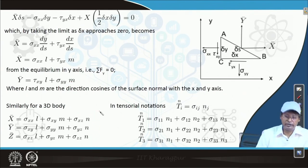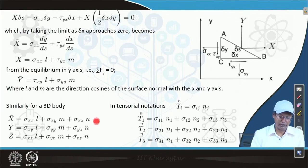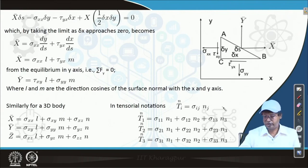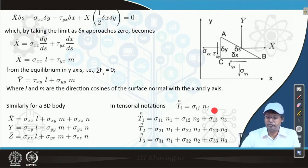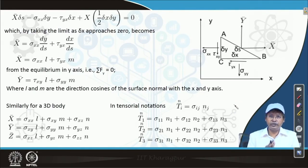For the three-dimensional case, the boundary equations involve direction cosines l, m, n with the full stress matrix sigma_xx, sigma_xy, sigma_xz and corresponding components. In tensorial notation, with j repeated (summation implied): t_i = sigma_ij times n_j. This equation will appear many times in further study — it is best to memorize it. The book references are standard elasticity texts.